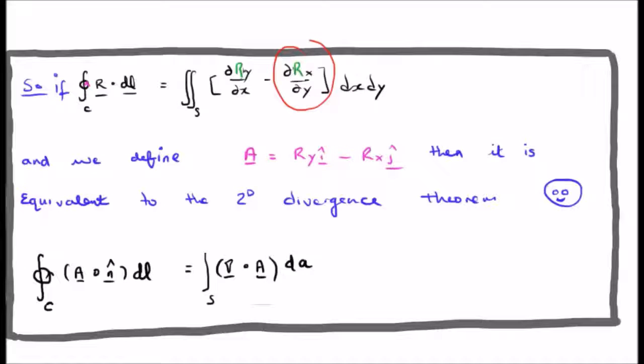If we define another vector field, capital A, as r sub y i hat minus r sub x j hat, then this is equivalent to the two dimensional divergence theorem. And we can use this expression down here, at the bottom of your screen.